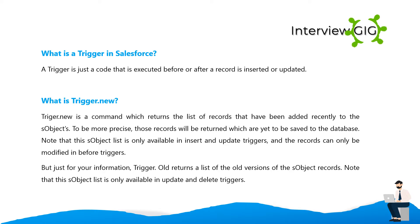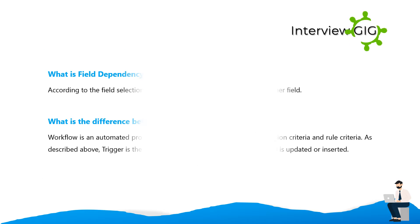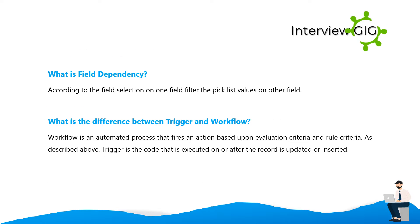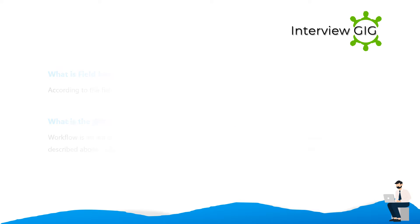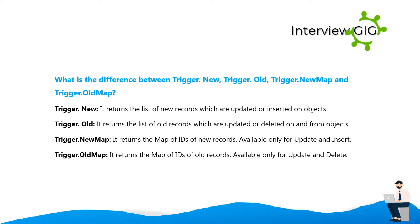What is field dependency? Based on the field selection on one field, it filters the picklist values on another field. What is the difference between trigger and workflow? Workflow is an automated process that fires an action based upon evaluation criteria and rule criteria. A trigger is code that is executed before or after a record is updated or inserted.